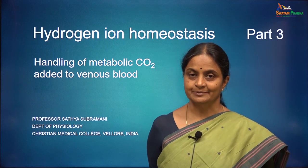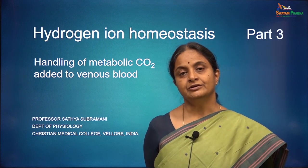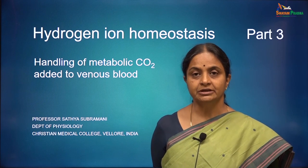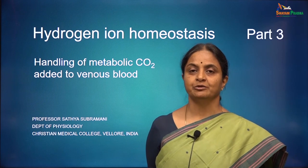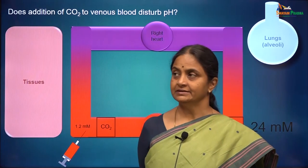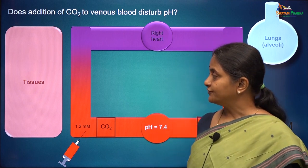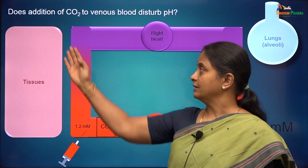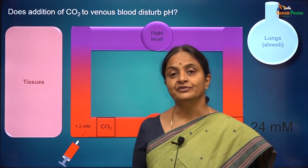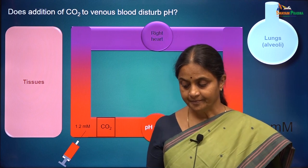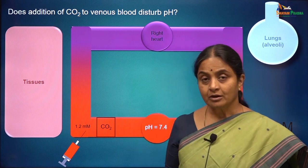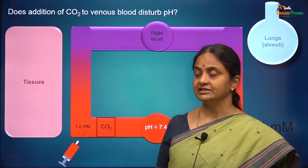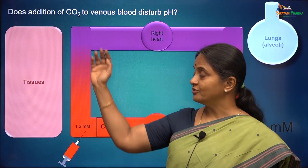Hydrogen ions in plasma remain within a very narrow range around 14 nanomoles per litre, in spite of constant addition of acid to venous blood resulting from metabolism of cells.